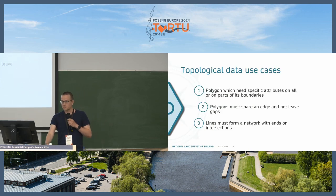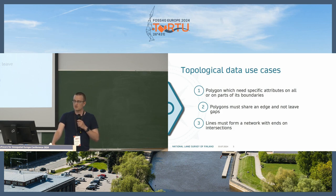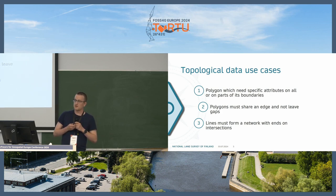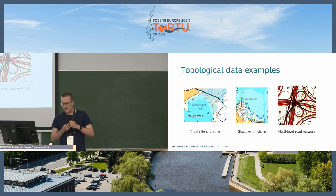Where would you use topological data and how it's used in the current system? For example, when we have a polygon feature which needs specific attributes on some or all parts of its boundaries, or a polygon must have a shared edge with another polygon so you don't want gaps between the two. We also have lines that must form networks, for example roads or water networks, where line ends must meet at intersections so we can have routing on the network.